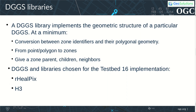A DGGS library provides the mathematical implementation of the partitioning and allows answering questions such as: converting between zone identifiers and their boundaries; converting between points and polygons and their corresponding zones; and navigation between parent, children, and neighboring zones.